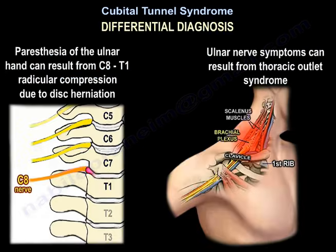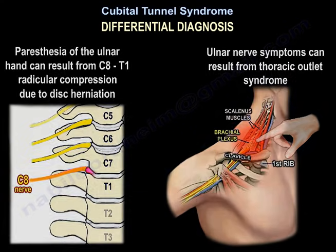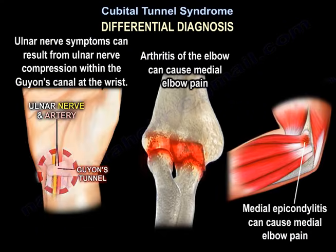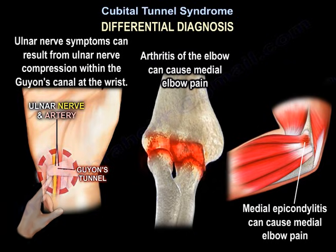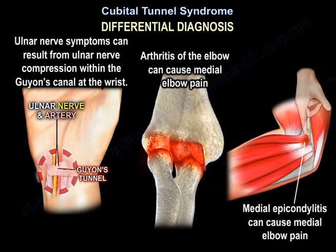The differential diagnosis for ulnar nerve paresthesia includes C8-T1 radicular compression due to disc herniation, thoracic outlet syndrome, and ulnar nerve compression within Guyon's canal at the wrist. Arthritis of the elbow and medial epicondylitis can also cause medial elbow pain.